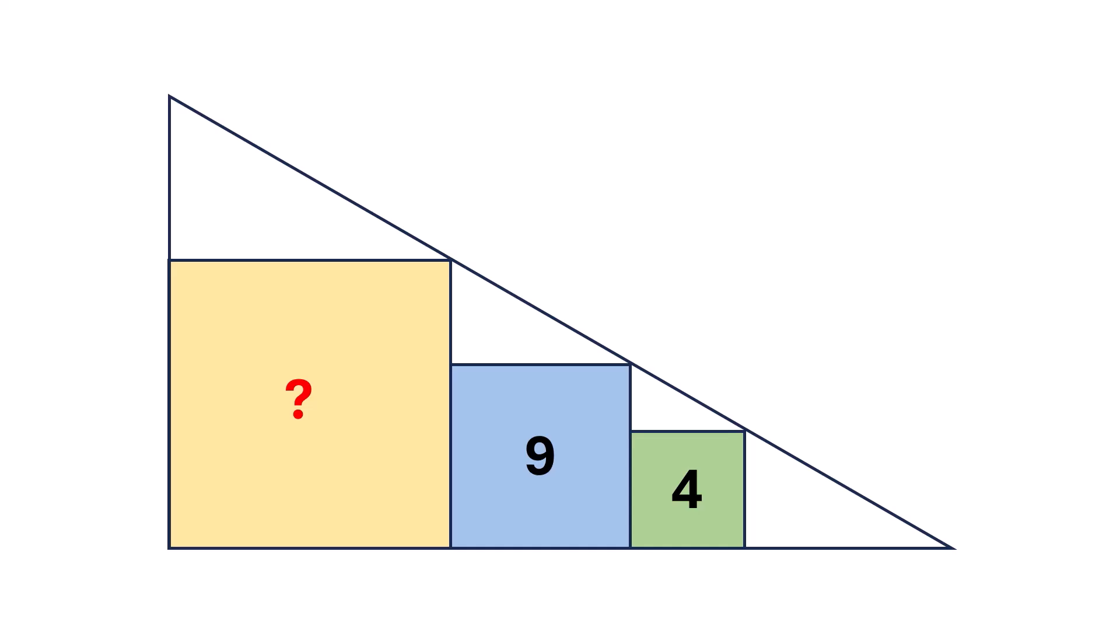Now, let's walk through the solution and uncover how we can find the missing area. Let's start by focusing on the smallest square. Its area is four, which means each side must be the square root of four. That's two units.